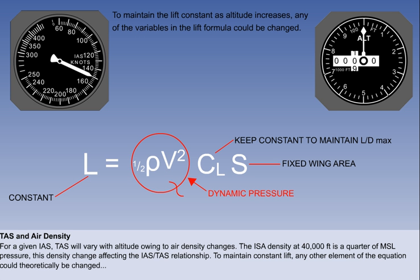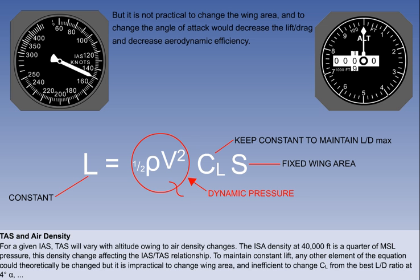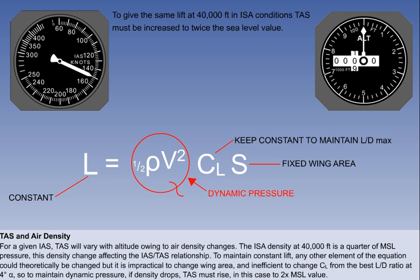To maintain constant lift as density decreases, any of the elements of the equation could be changed. But it is impractical to change wing area, and inefficient to change CL from the best lift drag ratio at 4 degrees angle of attack. So, since the dynamic pressure must be maintained, if one element drops, the density, the other, the TAS, must rise, in this case to twice the sea level value.